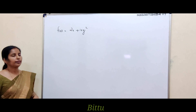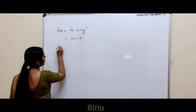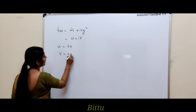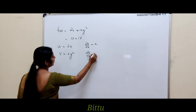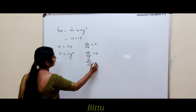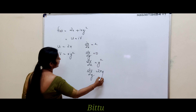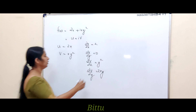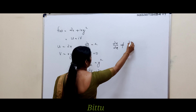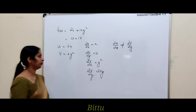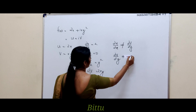Next, check the analyticity of f = 2x + ixy². This is in the form u + iv with u = 2x and v = xy². The partial derivatives are: ∂u/∂x = 2, ∂u/∂y = 0, ∂v/∂x = y², ∂v/∂y = 2xy. So ∂u/∂x ≠ ∂v/∂y and ∂u/∂y ≠ −∂v/∂x in general.